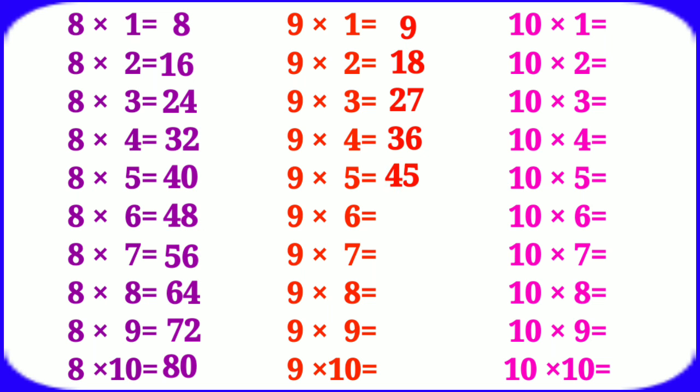9 fives are 45, 9 sixes are 54, 9 sevens are 63, 9 eights are 72, 9 nines are 81, 9 tens are 90.